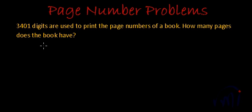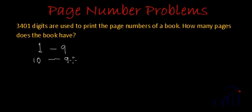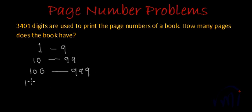As you must know, page numbers are printed starting from 1 to 9. Then you have 2-digit numbers from 10, the smallest 2-digit number, to 99, the biggest 2-digit number. And 3-digit page numbers start from 100 to 999. Then we have 4-digit numbers, which start from 1000 and last till 9999.